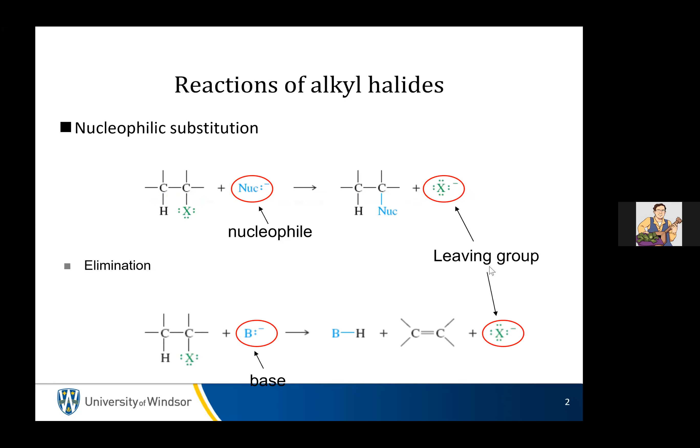We covered nucleophilic substitution last class — the nucleophile came in, displaced the leaving group, and kicked it out. Elimination is what happens when instead of attacking the leaving group carbon, the base attacks the hydrogen on the carbon adjacent to the carbon with the leaving group on it, and what we're doing is generating a double bond. You can think of this as essentially the inversion of Markovnikov addition of HX across a double bond — this is kind of the way back.